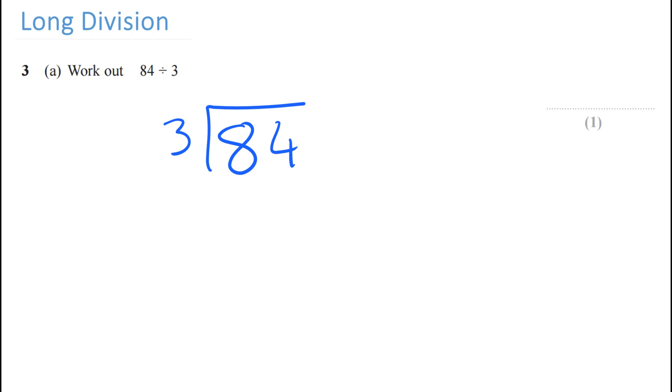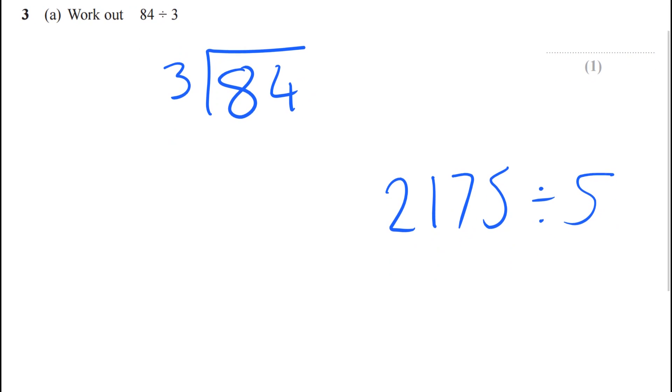So it's 84 divided by 3. Imagine it was 2175 divided by 5. The way you'd write that using the bus stop would be 2175 divided by 5.